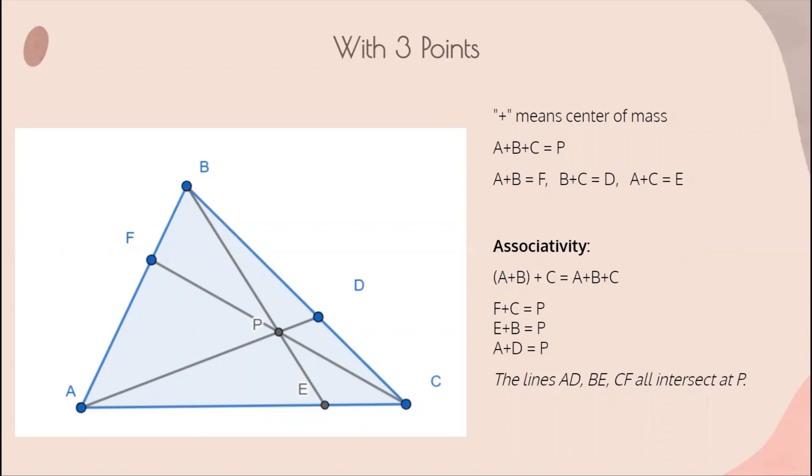Now mass points has this important property called associativity, which means that if you group some of the centers and do those first, then you will still get the same result in the end. This is a fancy way of saying that no matter how you put the parentheses, you're still going to get the same center of mass in the end. So this means that if you first find the center of A and B, which is F, and then you find the center of that with C, then the resulting point is the same as the center of mass of A, B, and C.